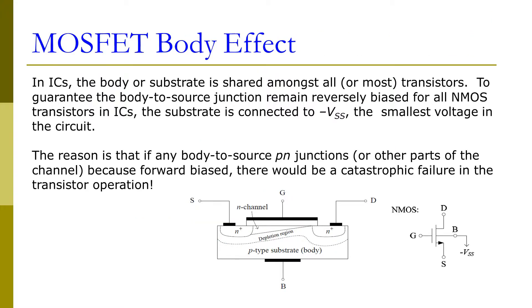In integrated circuits, the body or substrate is shared among all the transistors. To guarantee the body-to-source junction remains reverse biased for all the NMOS transistors in these integrated circuits, the substrate usually needs to be connected to the most negative voltage source in the circuit.